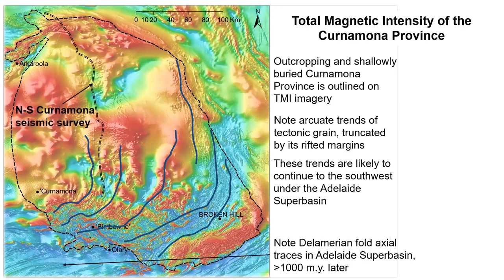Southwest of the Curnamona Province outcrops, we have the Adelaide Superbasin, which was folded in the Delamerian Orogeny. We can see the fold axial traces, which seem to follow in line with the trends of the basement folds — and yet these are more than a billion years younger.